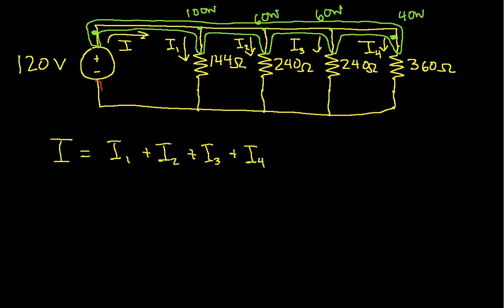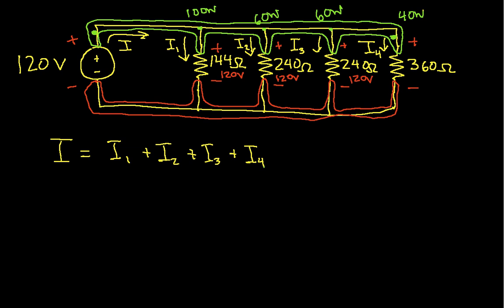Similarly, the part that I'm outlining in red is also all one node using the exact same logic. Everything outlined in red is one node. Now, this is important to me because the voltage source is going to make sure that the voltage between the green node and the red node is 120 volts. So what that means is that the voltage across the 144 ohm resistor is 120 volts. The voltage across the 240 ohm resistors are both 120 volts. In other words, the voltages across all the resistors are 120 volts. That's because the voltage between the two nodes is exactly 120 volts.